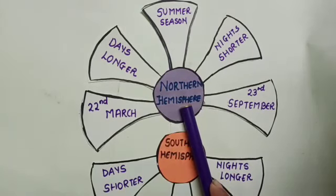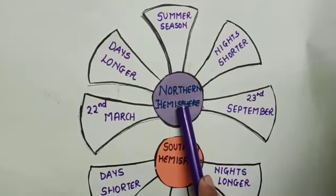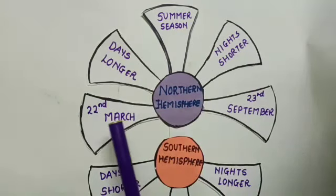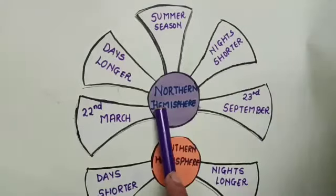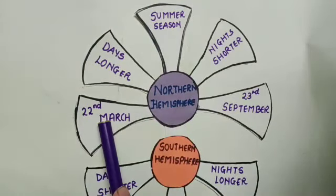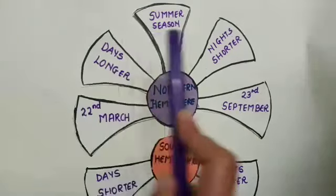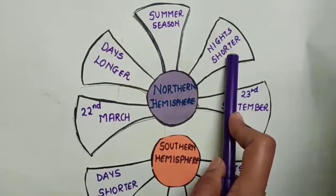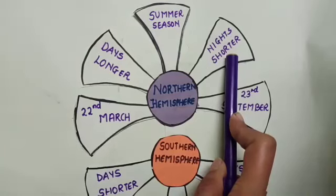You can see in the diagram that we have studied about two hemispheres — the northern hemisphere and the southern hemisphere. Let's look at the northern hemisphere first. I have mentioned two dates: 22nd March and 23rd September. During the period from 22nd March to 23rd September, in the northern hemisphere the days are longer and the nights are shorter. You may have heard from your grandparents that in summer the days become longer — the sun sets late at 7 or 7:30 pm and rises early at around 5:30.